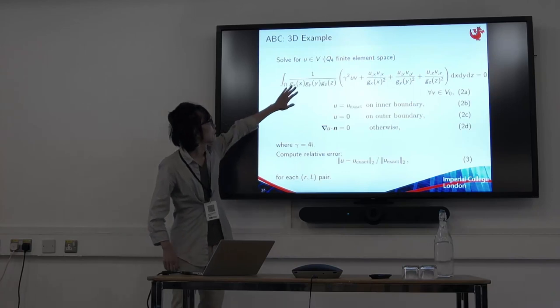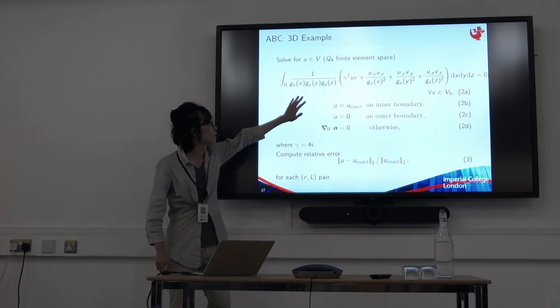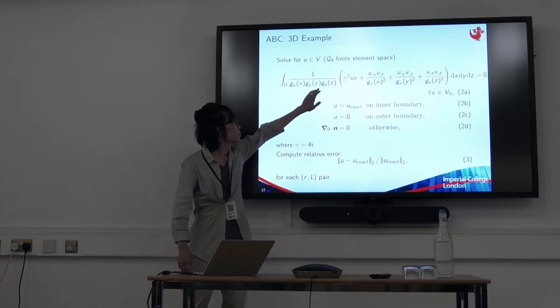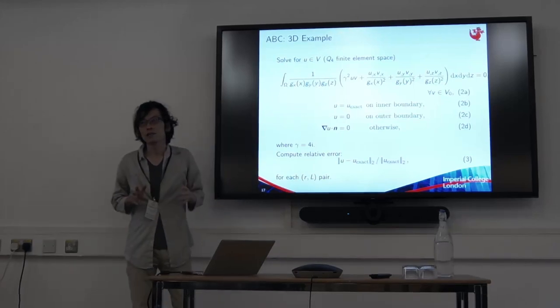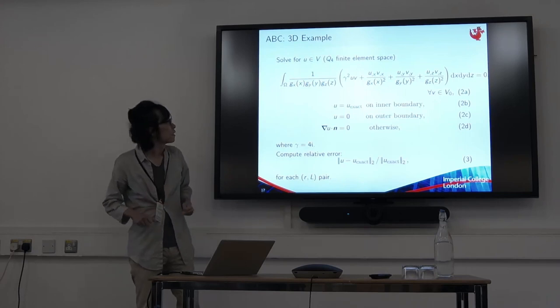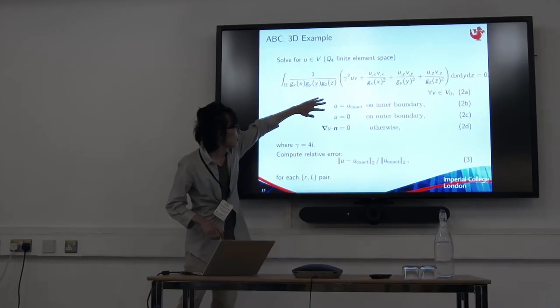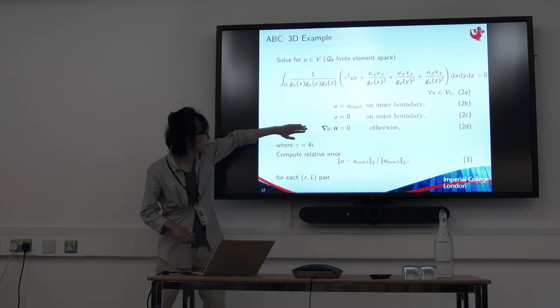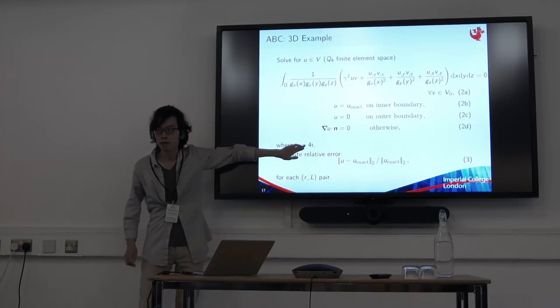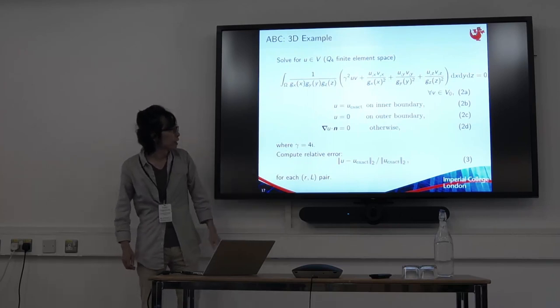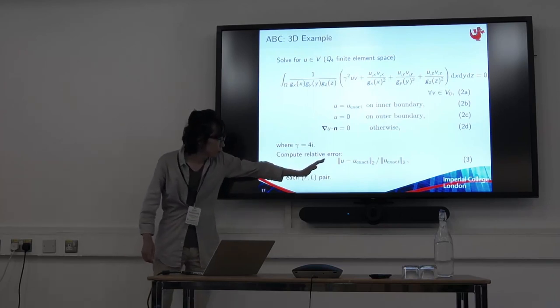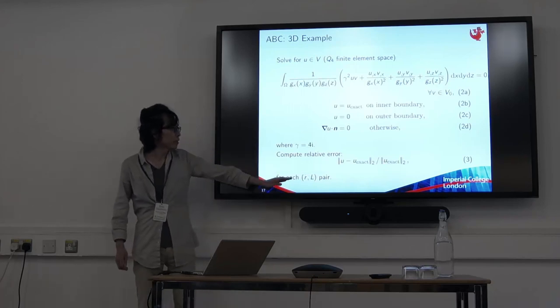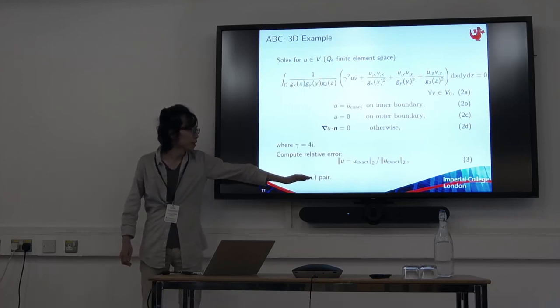This is the 3D counterpart of the 1D example. The Helmholtz-like equation, G of X, G of Y, G of Z, these are all 1 in the physical domain. And these are the Dirichlet boundary conditions derived from Neumann boundary conditions, and gamma is chosen to be 4i, 4 is the frequency.